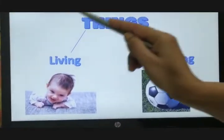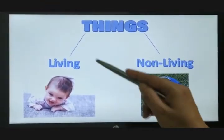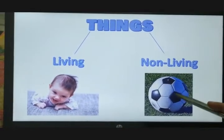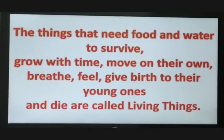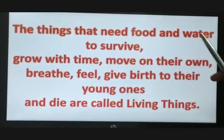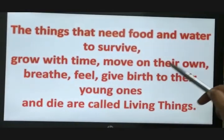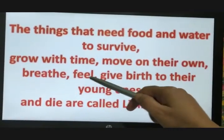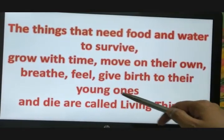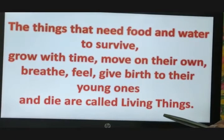We learned that everything we see around us is either a living thing or a non-living thing. We also learned that the things that need food and water to survive, grow with time, move on their own, breed, feel, give birth to their young ones, and die are called living things.